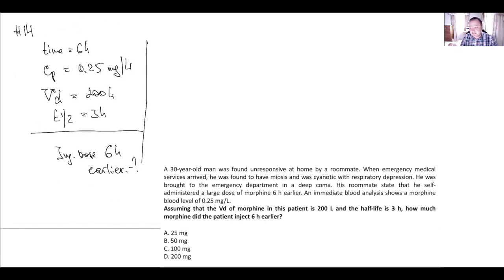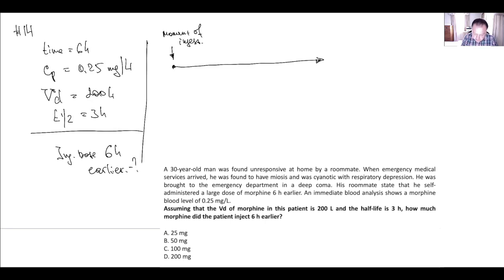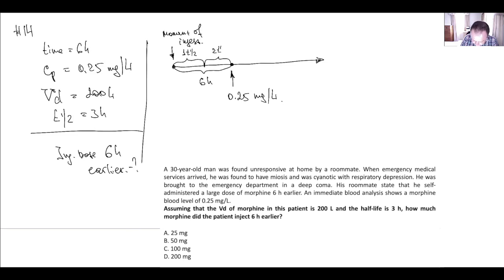For this type of question, when you have a time frame, I recommend drawing a timeline — this will help you understand and calculate. On the timeline we have the moment of ingestion, and after 6 hours we have the plasma concentration of 0.25 milligrams per liter. The half-life is 3 hours, so within those 6 hours we fit exactly 2 half-lives. Each half-life, plasma concentration decreases by half — and counting backwards, it rises by 2 times per half-life.